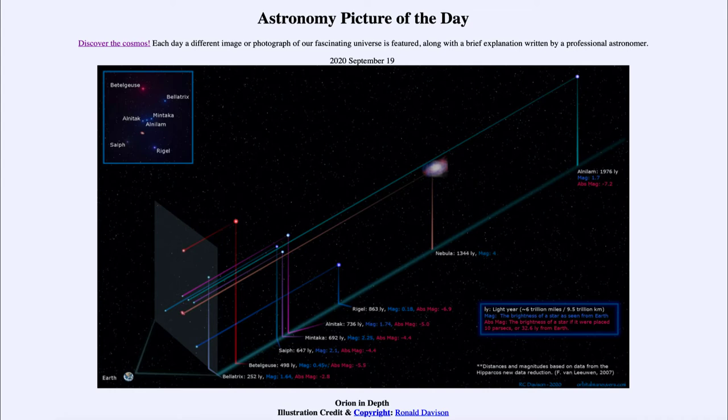Bellatrix is actually about 250 light years away and is by far the closest of the main stars in Orion.